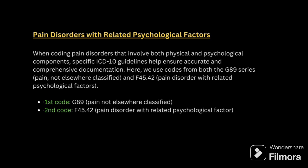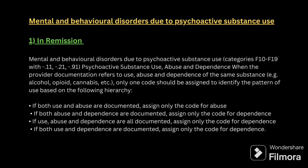Next is Pain Disorder with Related Psychological Factor (F45.42). Here, both physical pain and psychological pain are present. In this case you must code from the G89 series first — G89 for pain not elsewhere classified — as the primary code, and then F45.42 as the secondary code.